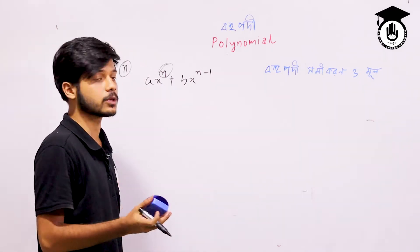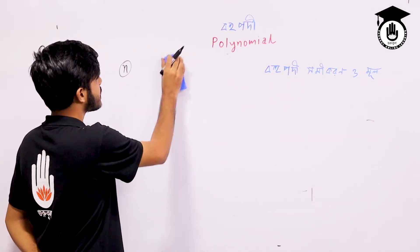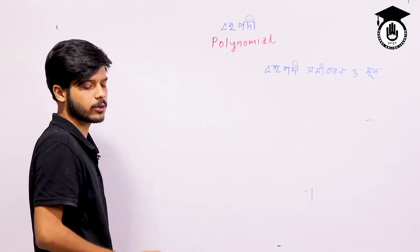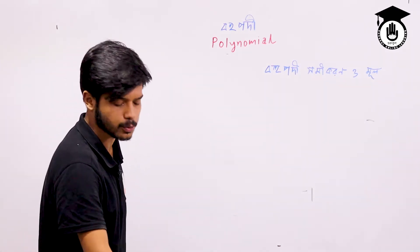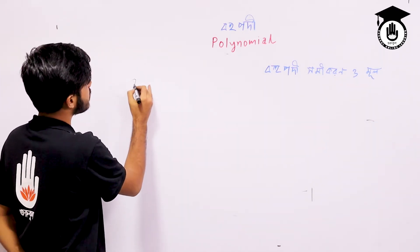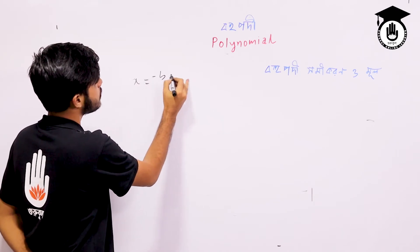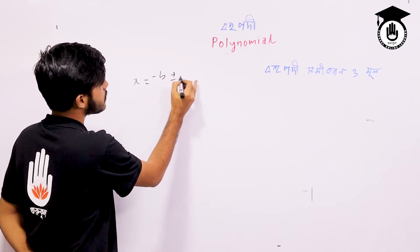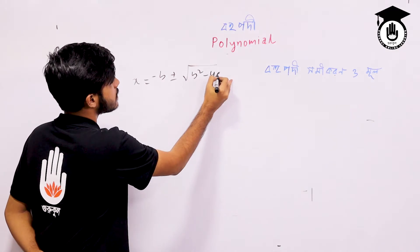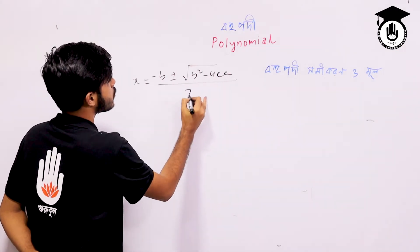I will tell you about the class. The class is 2. The second class is 2. How do we get this class? x equals minus b plus or minus the square root of b squared minus 4ac, all divided by 2a.